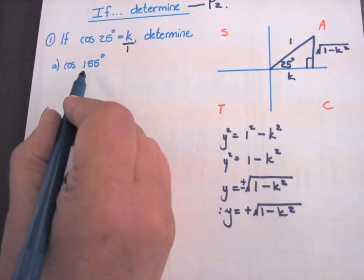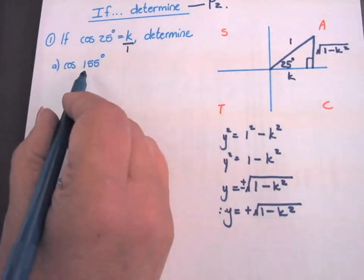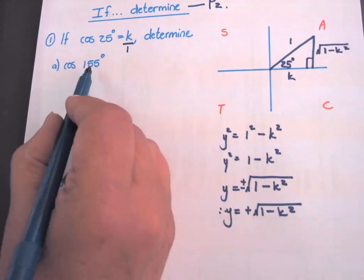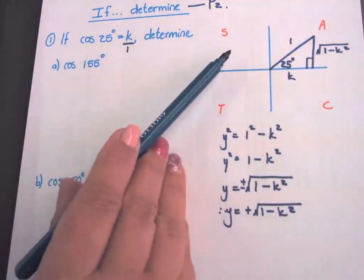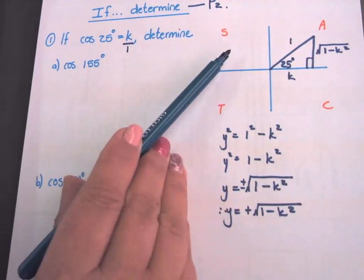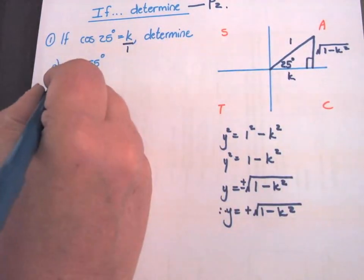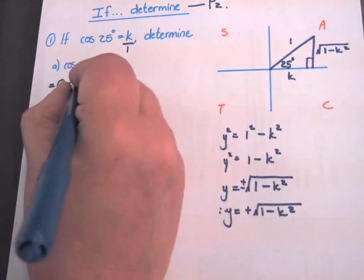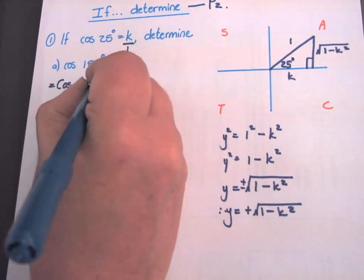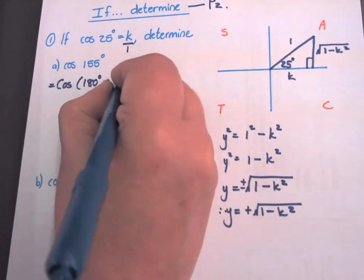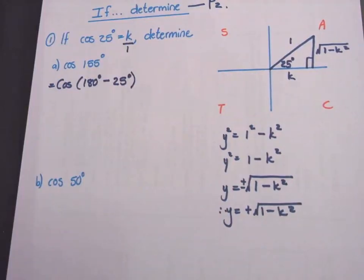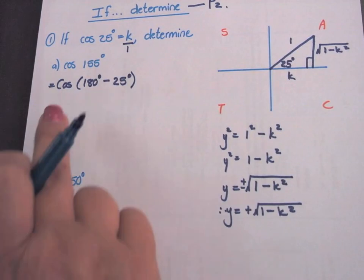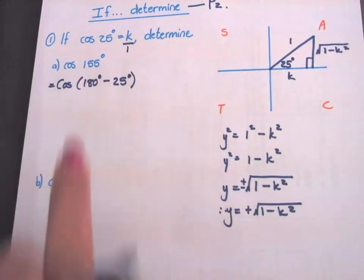Cos 155. Where is 155 degrees? Here at S, second quadrant. So I am going to use my reduction formula: cos of 180 minus 25 degrees. That gives me 155 degrees.